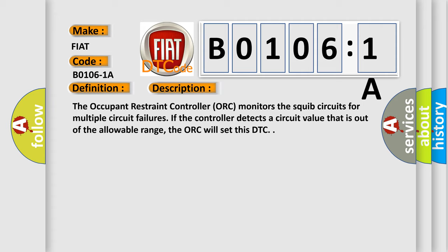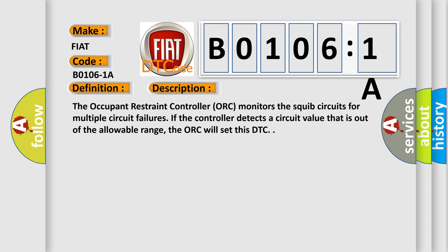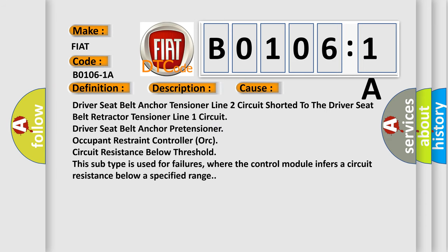This diagnostic error occurs most often in these cases: driver seat belt anchor tensioner line two circuit shorted to the driver seat belt retractor tensioner line one circuit, driver seat belt anchor pretensioner occupant restraint controller ORC circuit resistance below threshold. This subtype is used for failures where the control module infers a circuit resistance below a specified range.